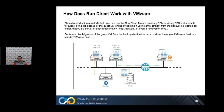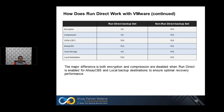How does RunDirect work with VMware? Should the production VM fail, you can use the RunDirect feature on OBM or the CBS web console to quickly bring the backup of the guest machine online by booting it up instantly from the backup file on the CBS server or local destination. Once booted up, you can perform a live migration of the guest machine back to the original host or to a standby host. The major difference with RunDirect enabled is that both encryption and compression are disabled for CBS or local backup destinations to ensure optimal recovery performance. Also, RunDirect does not support cloud destinations.